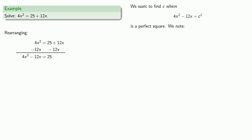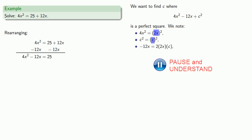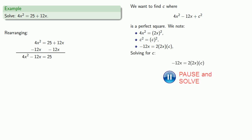We want to find c where 4x squared minus 12x plus c squared is a perfect square. We know 4x squared is the same as 2x quantity squared. We want minus 12x to be 2 times the square roots — 2x times c. Solving for c, we find c is equal to negative 3, so c squared is negative 3 squared. We'll add this to both sides of our equation.